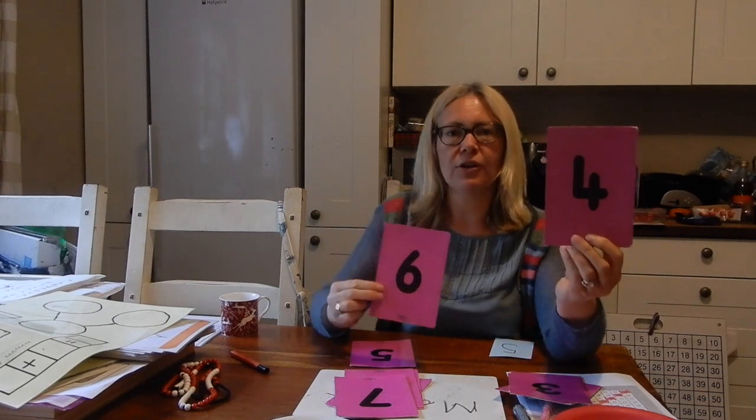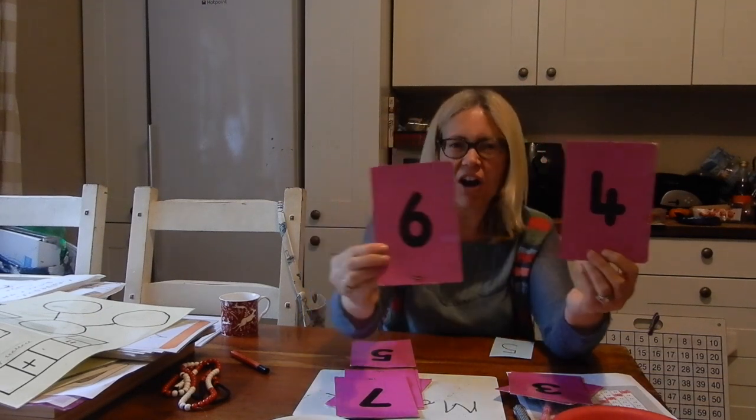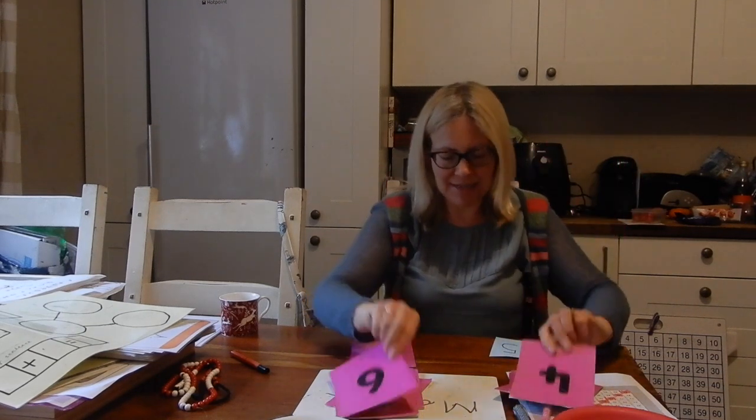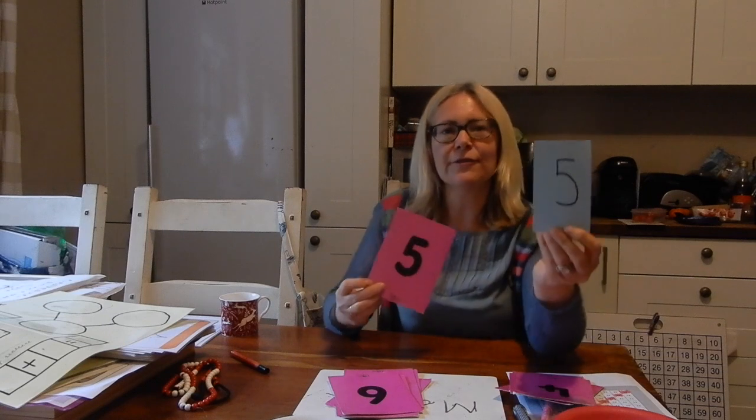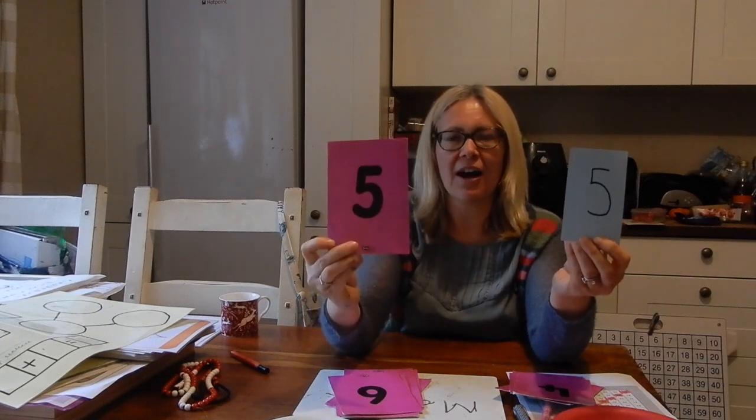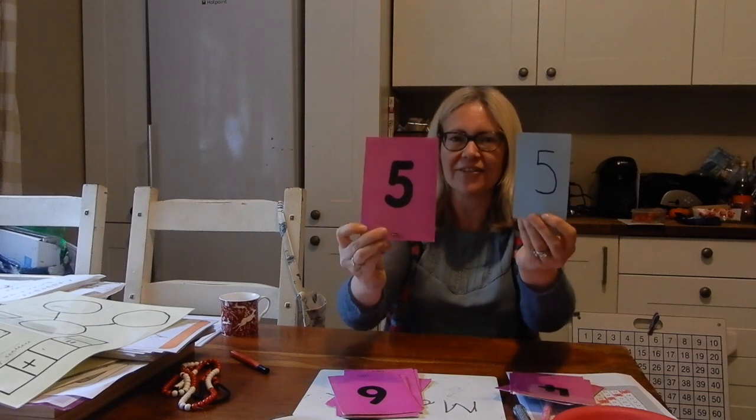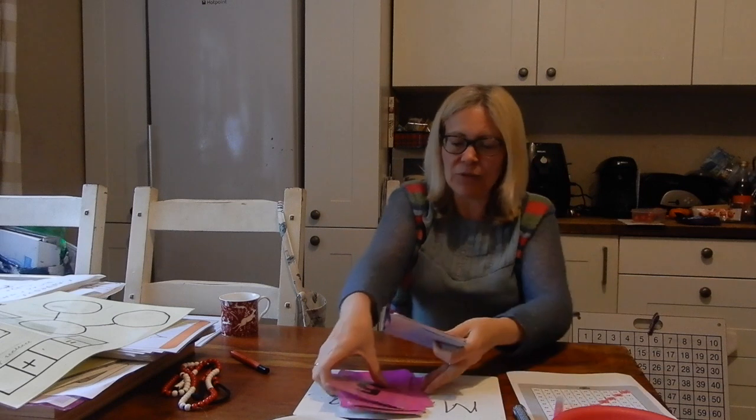Four and six are in the mix, because four and six make ten. And five and five like to jump and jive. Five and five make ten. So that is our bonds to 10 chart. Excellent if you remembered any of those today.